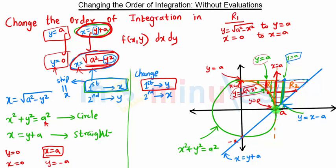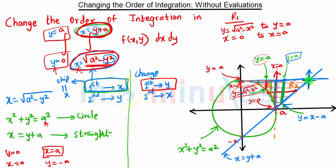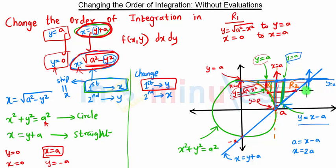We have to cover region R2, which starts from x equal to a and ends at another point. To find this endpoint, we put y equal to a into the equation y equal to x minus a, giving us a equal to x minus a, so x equal to 2a. This point represents x equal to 2a. So we move this strip from x equal to a to x equal to 2a to cover region R2.